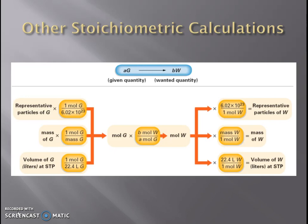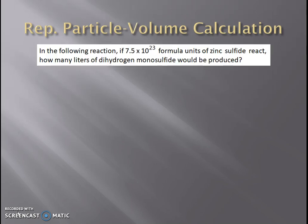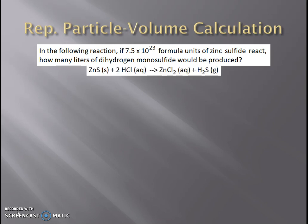Let's take a look at one of those different types of calculations: taking representative particles and getting to a volume of a different substance through a balanced chemical equation. In this reaction, we have 7.5 × 10²³ formula units of zinc sulfide that are going to react, and we want to figure out how many liters of dihydrogen monosulfide would be produced. The reaction is zinc sulfide reacting with hydrochloric acid to make zinc chloride and dihydrogen monosulfide gas. We'll list out known and unknown and break it down step by step.